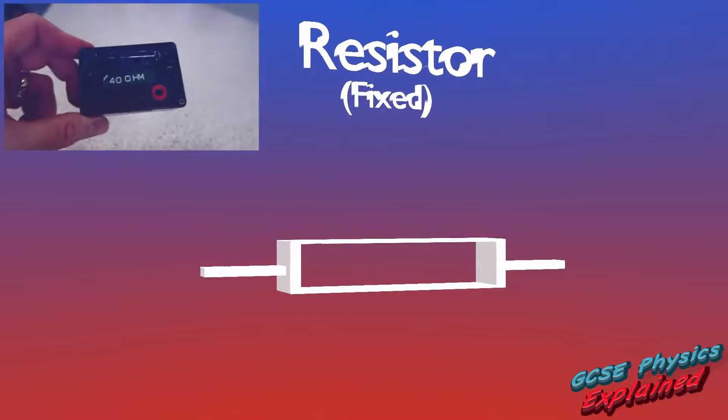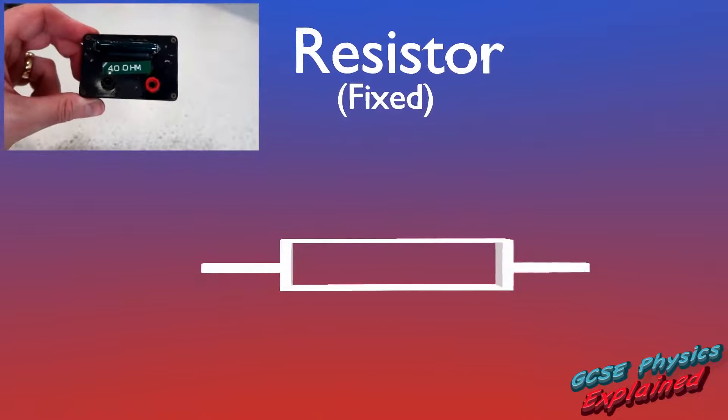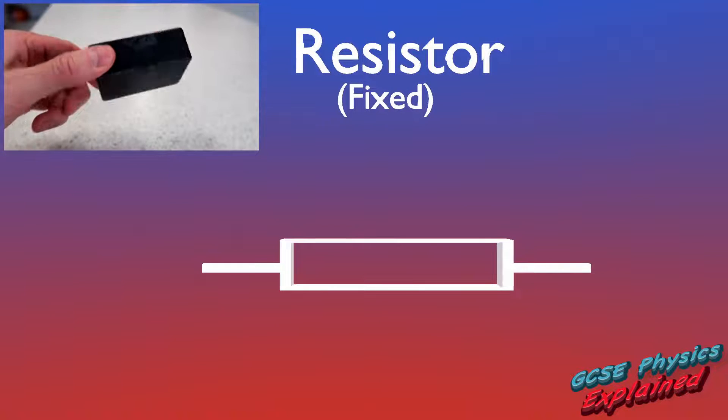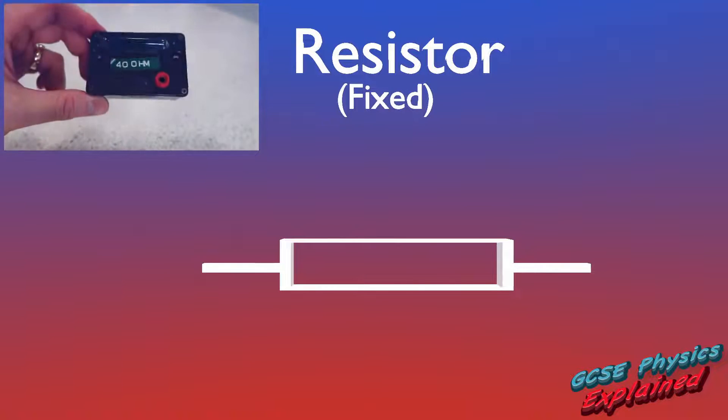Resistors restrict the flow of electrical current. The symbol is just a rectangle.